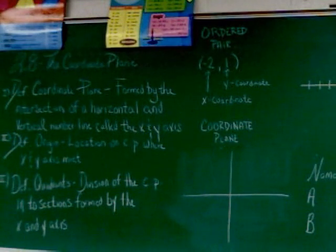The coordinate plane is formed by the intersection of a horizontal and vertical number line called the x and y axis.